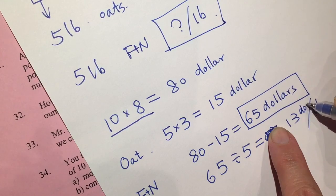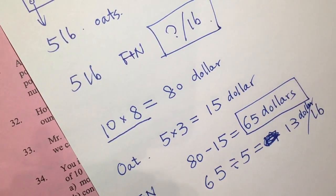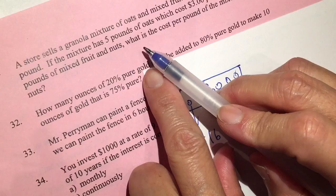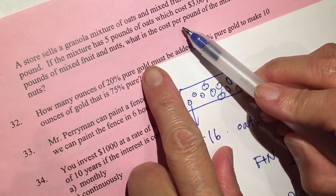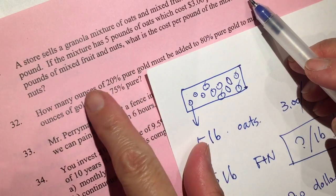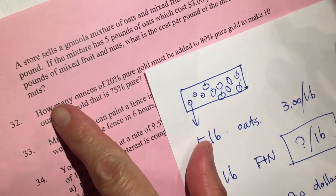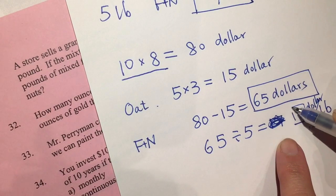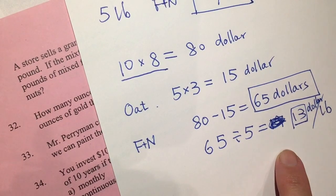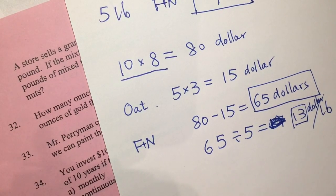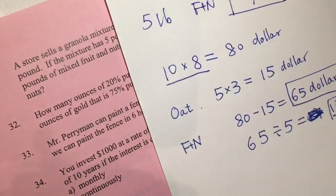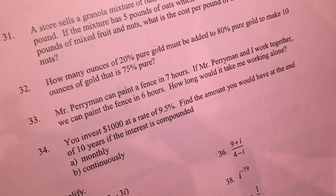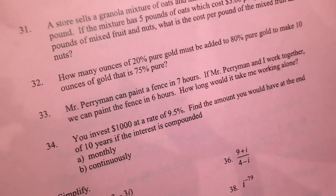So now we solve the problem. What is the cost per pound of the mixed fruit and nuts? That is $13 per pound. Make sense? We solved our problem.